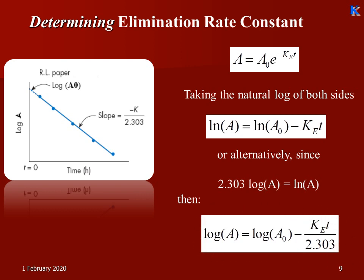When we plot the graph of log A versus time t, we get a straight line with slope −Ke / 2.303 and y-intercept log A0. In this way it is possible to simplify the equation dA/dt = −Ke · A by taking integration of both sides and converting from exponential form into the logarithmic form.